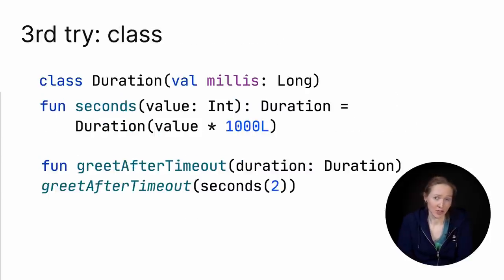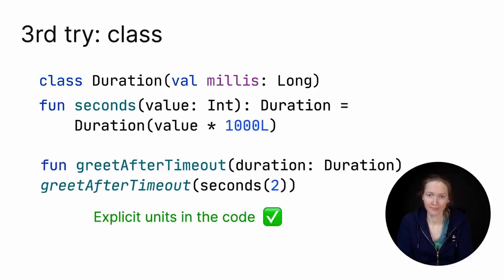Defining a separate Duration class solves the type safety problem. We can define auxiliary functions, like seconds or minutes, to emphasize the time units. It's no longer error-prone to use the new greet-after-timeout function. We have explicit units in the code.